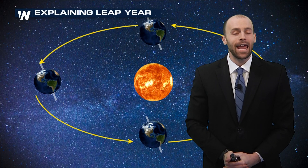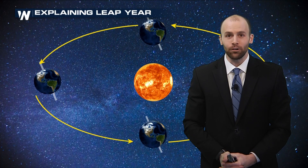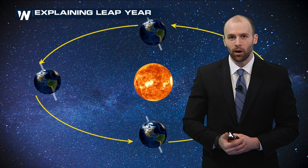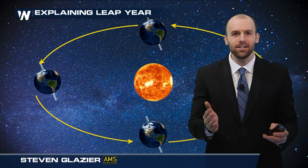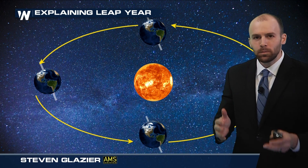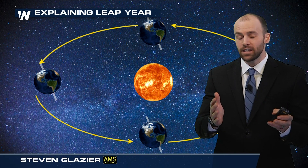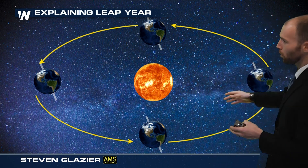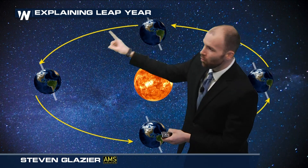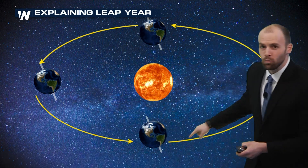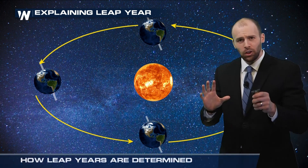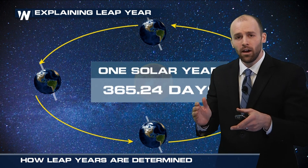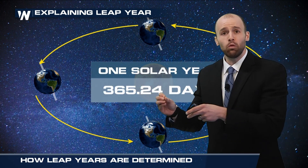This year we are in a leap year, so we add an extra day to the end of February — but why is that? Well, it's because of our solar cycle. It's not exactly 365 days to get one loop around the sun. It's a little extra than that: 365.24.